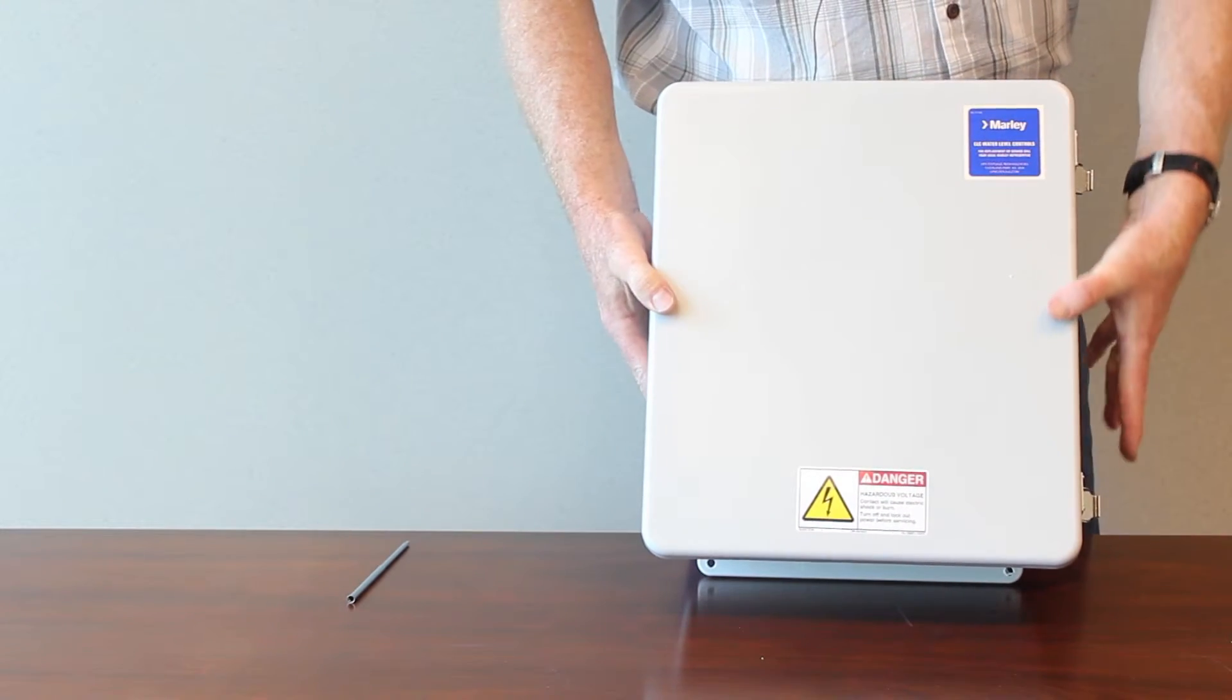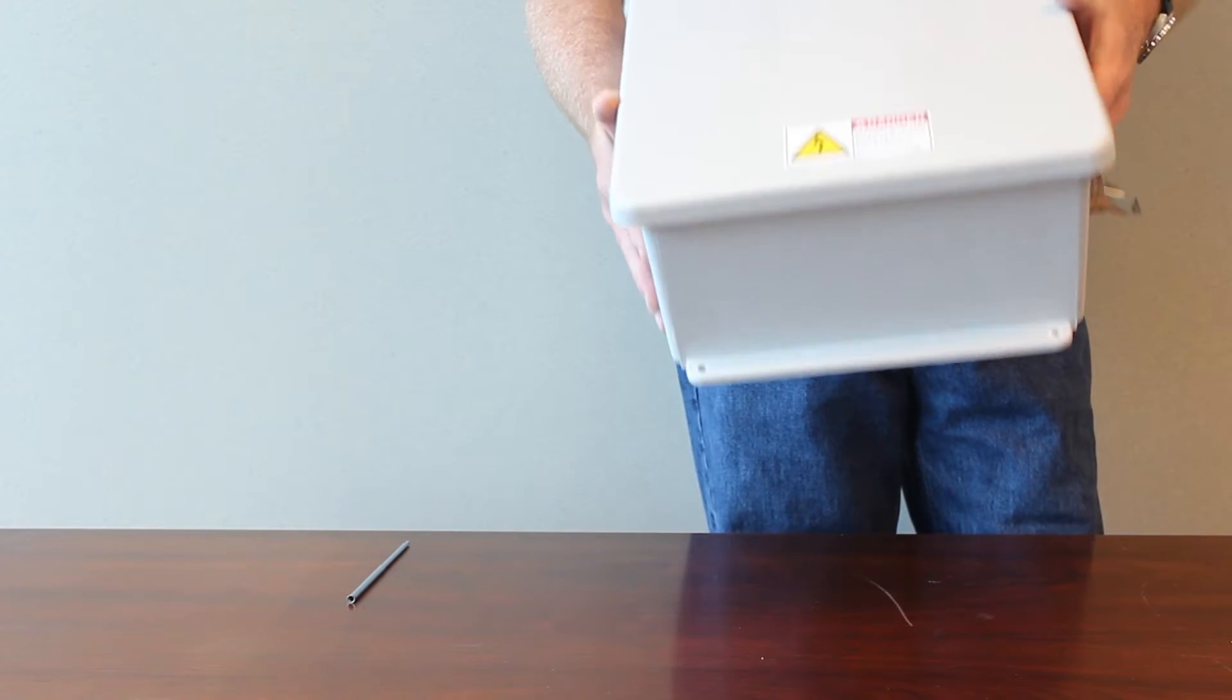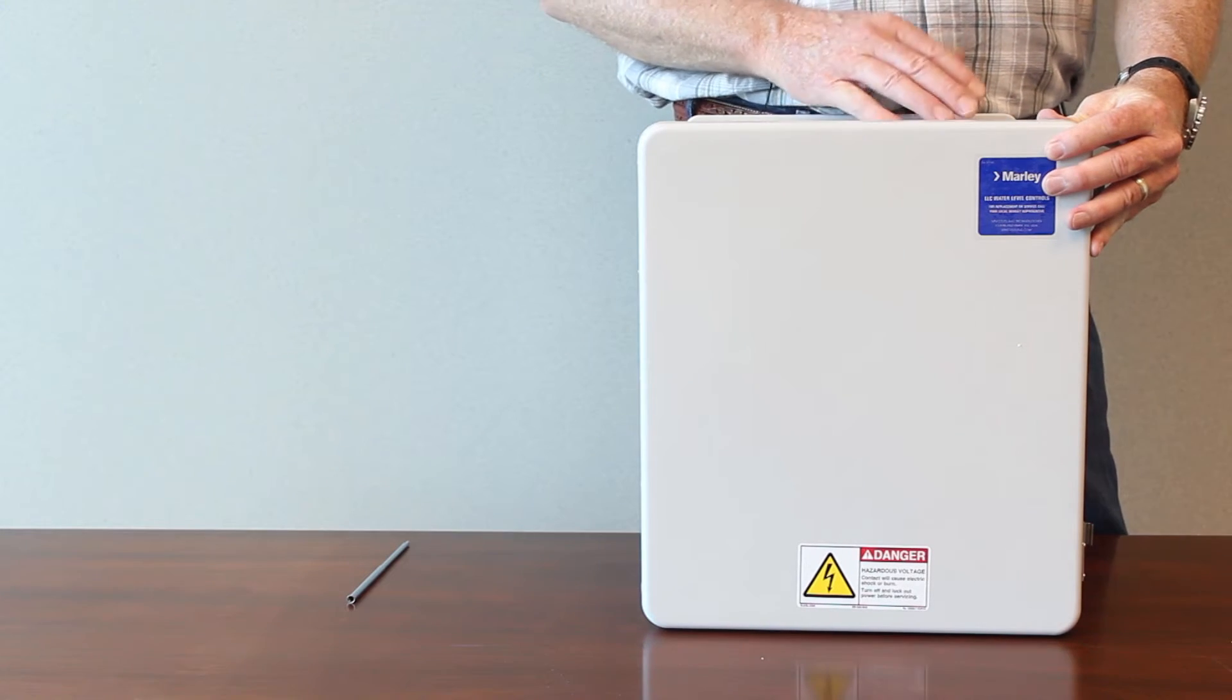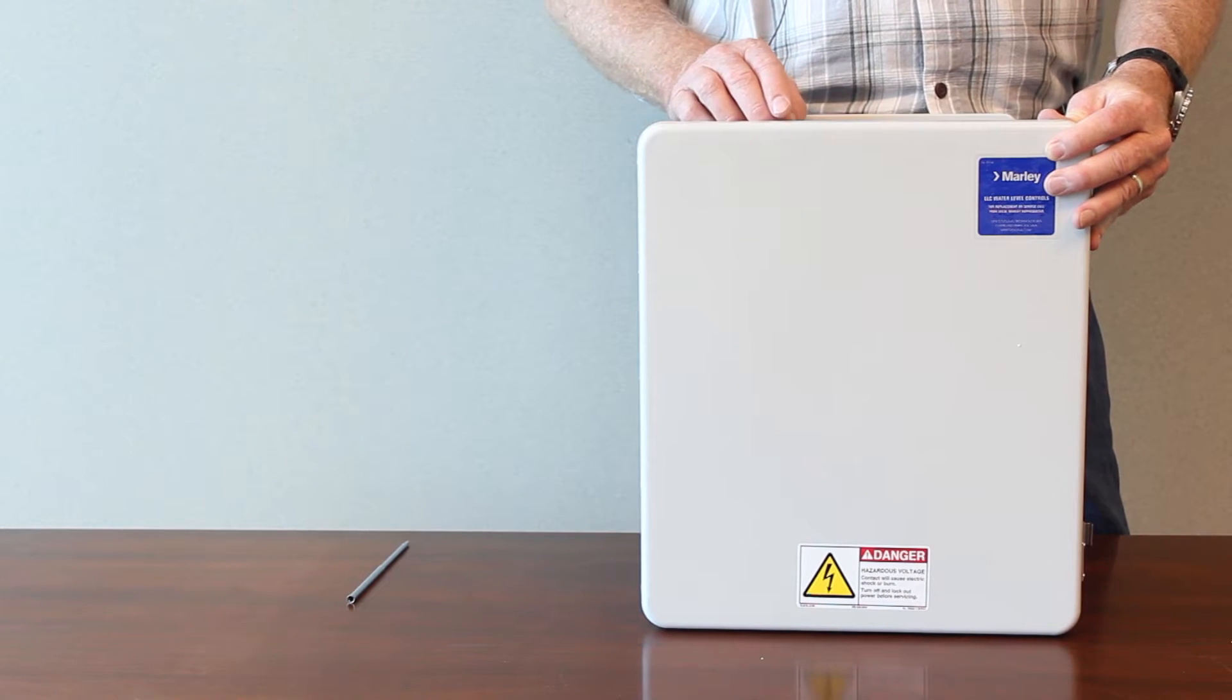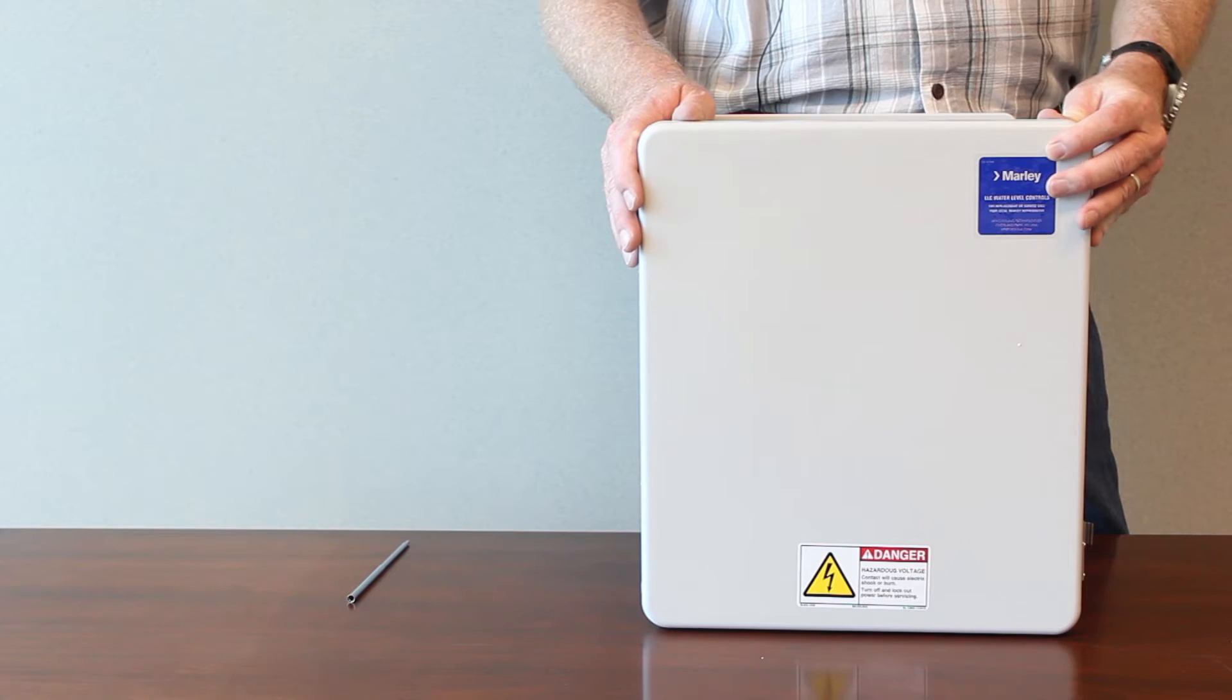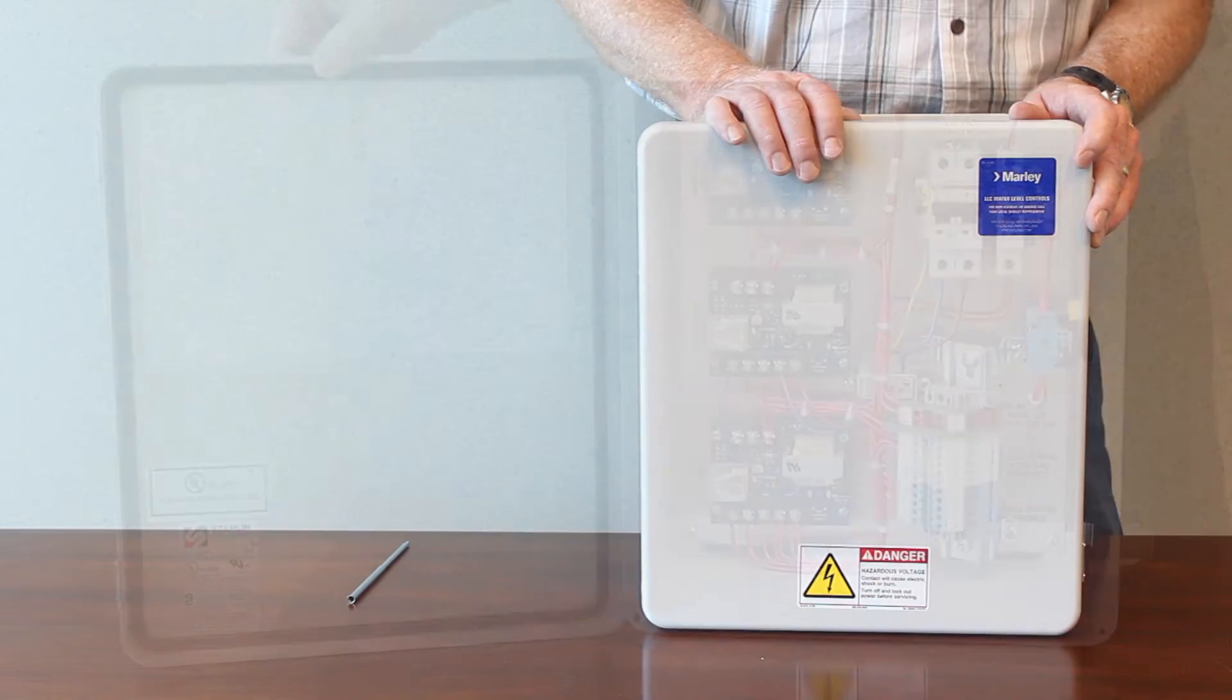Make sure all your conduits come into the bottom of the control panel. Conduits coming into the top of an outdoor enclosure, whether it's this rating or any other rating, is really not a good idea because water can seep in and this being a watertight enclosure if water gets in it can't get back out. So it's very common best practice to run your conduits into the bottom of the control panel.